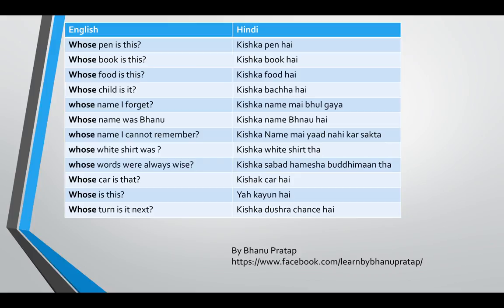Whose car is that — kiska car hai. Who is this — yeh kaun hai. The same word will change based on situation — sometimes, according to the context, some words change. Whose turn is it next — kiska doosra chance hai. 'Next' means 'doosra' and 'turn' here means 'chance.'